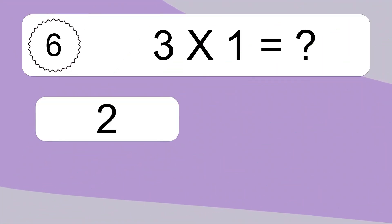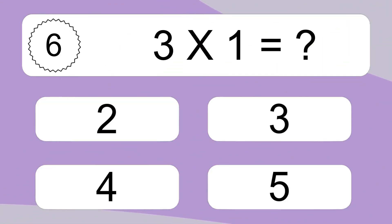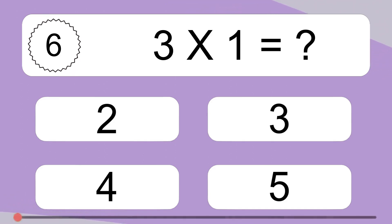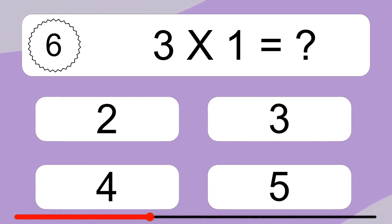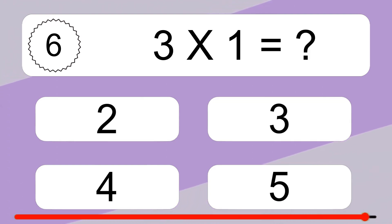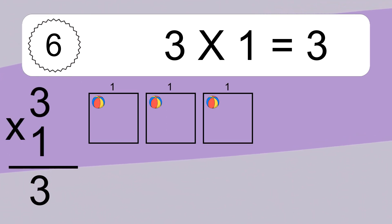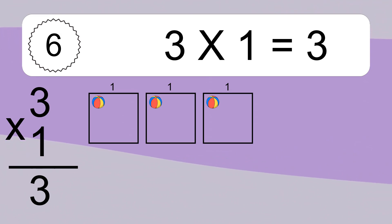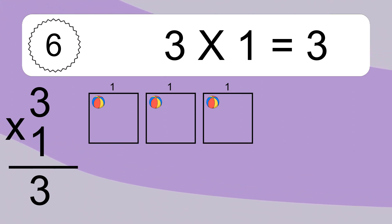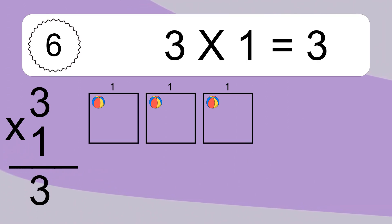Three times one equals what? Three times one equals three. We have three boxes, and each box has one colorful ball inside. If you count all the balls in all the boxes together, you will have three times one balls. This equals three balls.